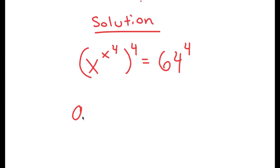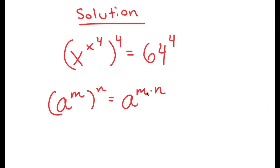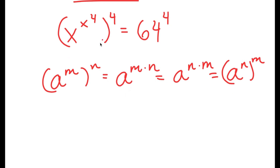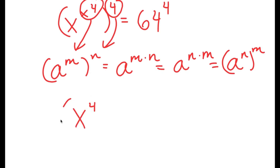If I have something in the form a to the power of m to the power of n, this is equal to a to the power of m times n. However, m and n are interchangeable, meaning this can also be written as a to the power of n times m, which equals a to the power of n to the power of m. So x to the power of x to the power of 4, to the power of 4 — thinking of x to the power of 4 as m and 4 as n — turns into x to the power of 4 to the power of x to the power of 4, is equal to 64 to the power of 4.